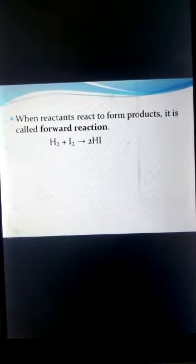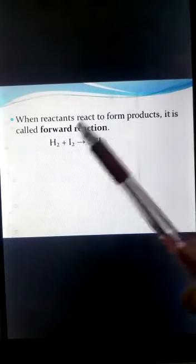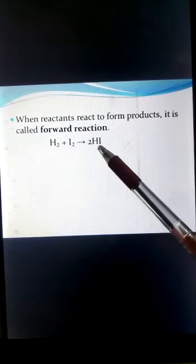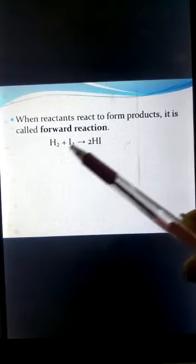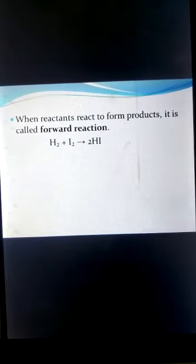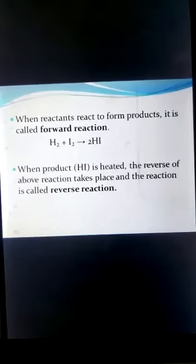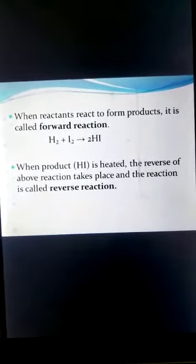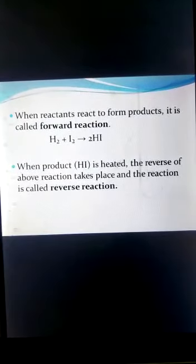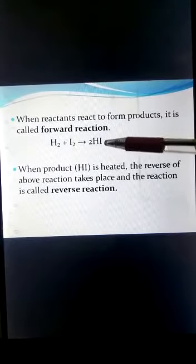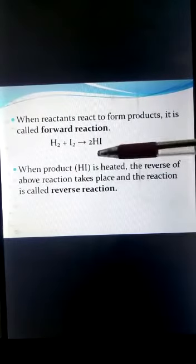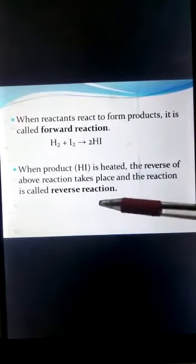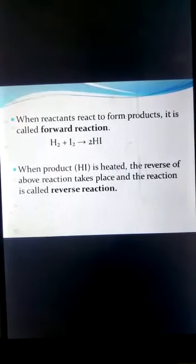For example, in this reaction, hydrogen and iodine combine to form hydrogen iodide — reactants forming a product — and this is called the forward reaction. When hydrogen iodide (the product) is heated, the reverse of this reaction occurs, which is called the reverse reaction.